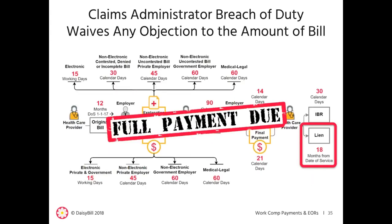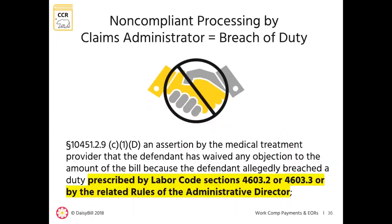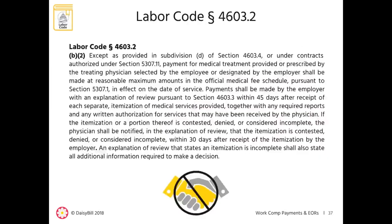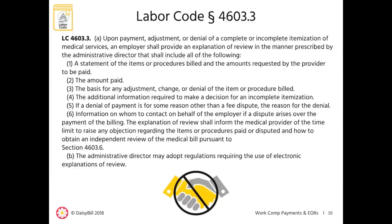This means full payment is due when a claims administrator fails to comply with its duties. If the claims administrator breaches its duty, the claims administrator cannot object to any amount of the bill. More specifically, this regulation instructs a provider to file a lien when a claims administrator breaches its duty as prescribed by Labor Code sections 4603.2 and 4603.3 or the rules of the administrative director. Today we will parse these labor codes; please keep in mind that a lien is allowed when a claims administrator fails to perform its mandated duties.